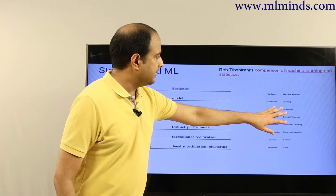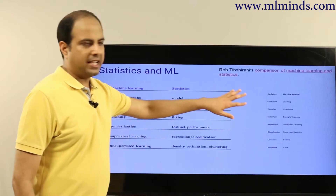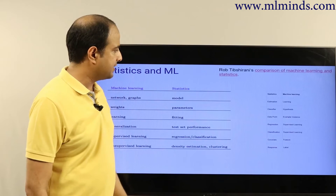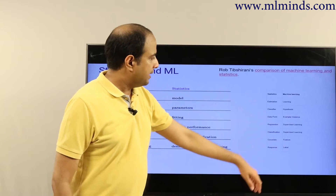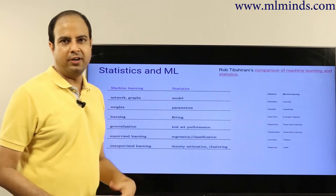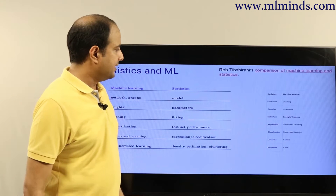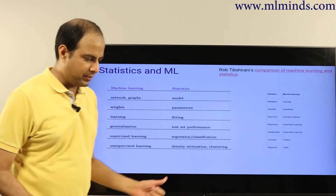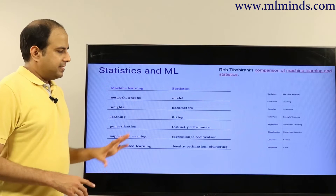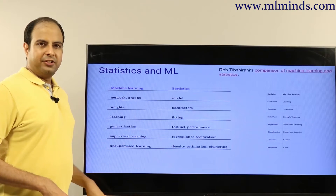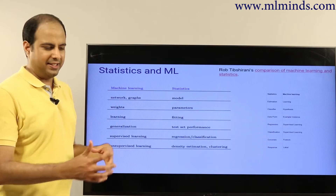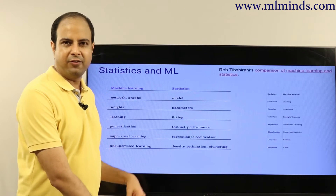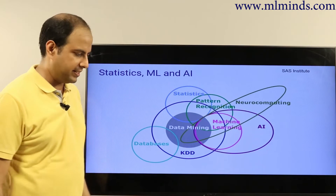Other terminology differences: 'learning' is called 'estimation' in statistics, a 'hypothesis' would be called a 'classifier' in statistics, an 'example' or 'instance' is called a 'data point,' a 'feature' is called a 'covariate,' and a 'label' is called a 'response.' The idea is that statistics and ML have many common concepts — it's just that they are named differently, which often causes confusion for newcomers.